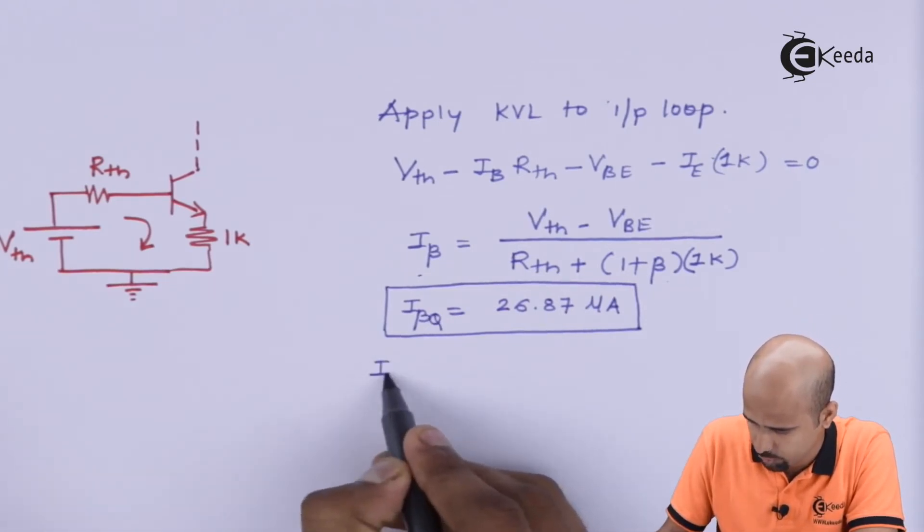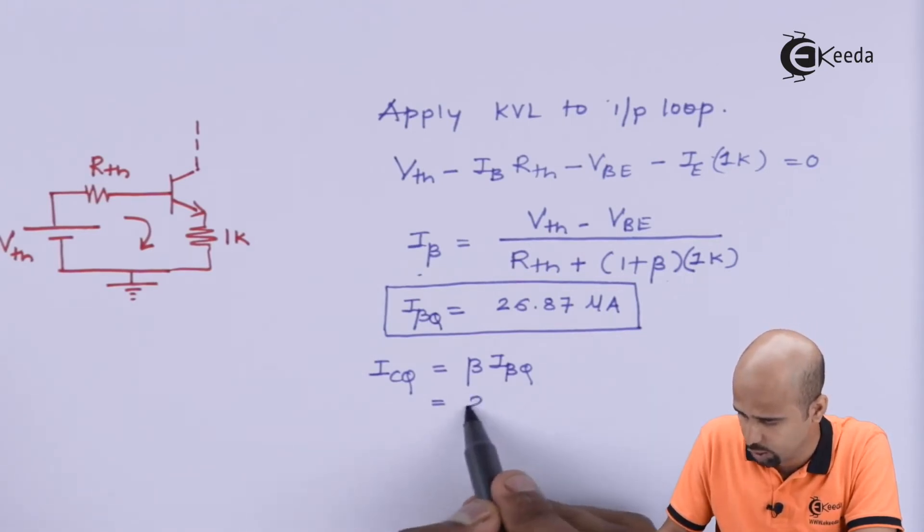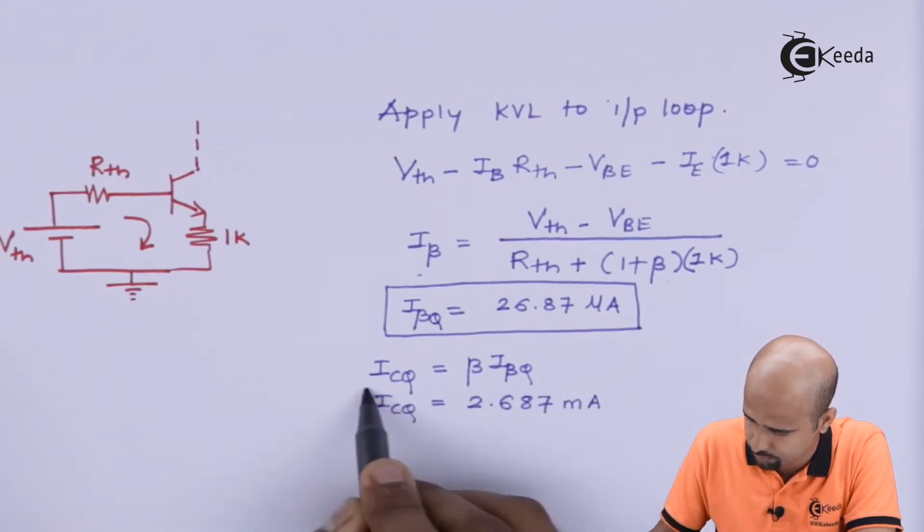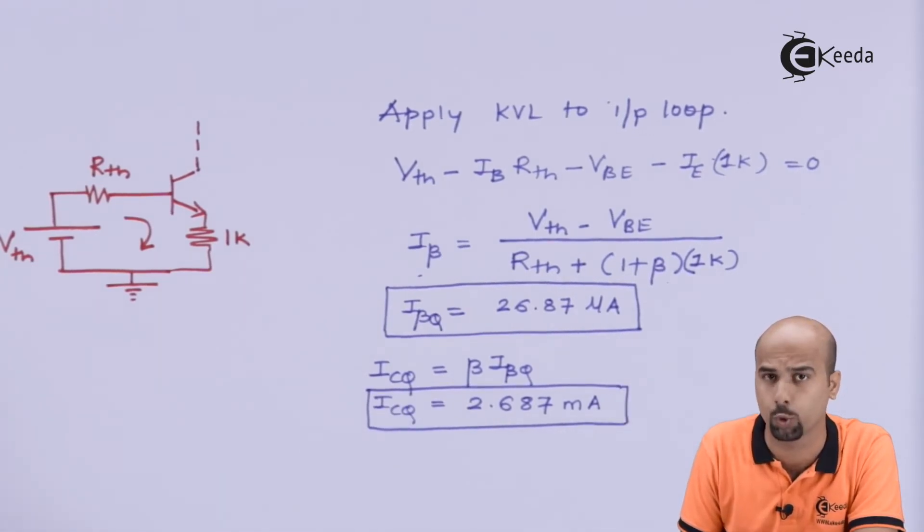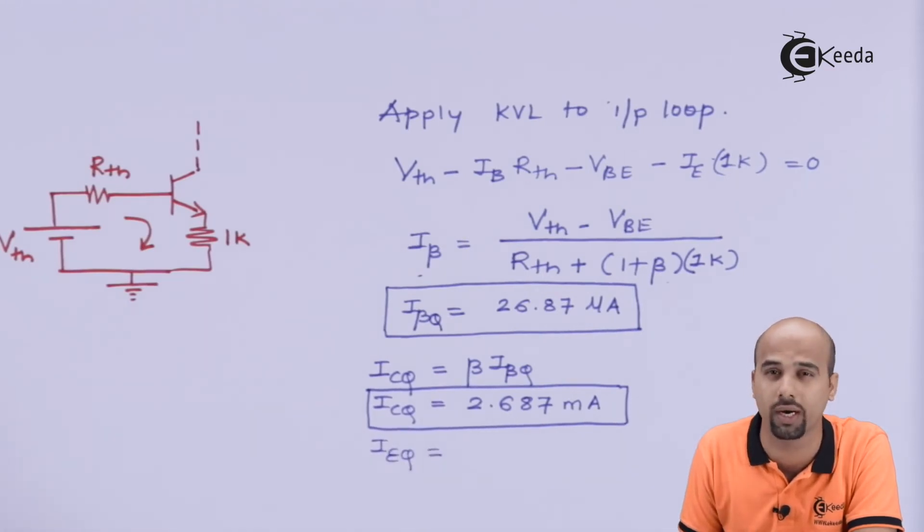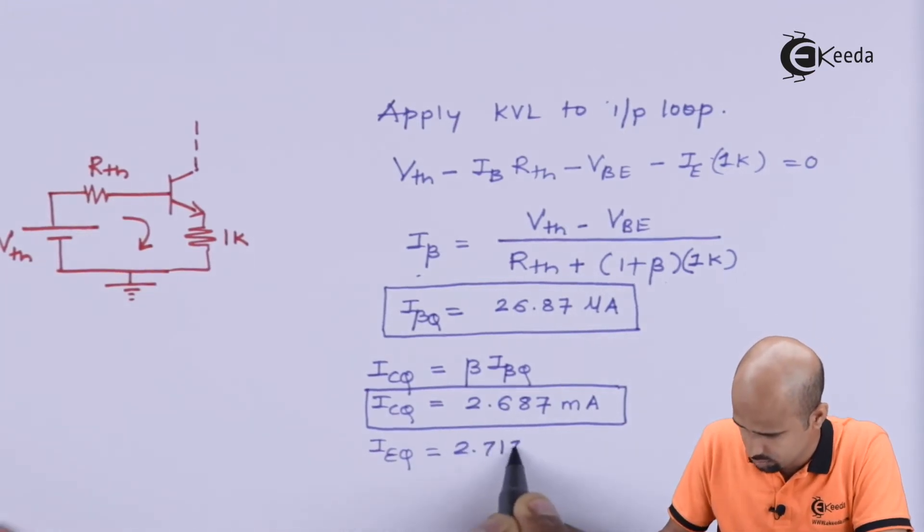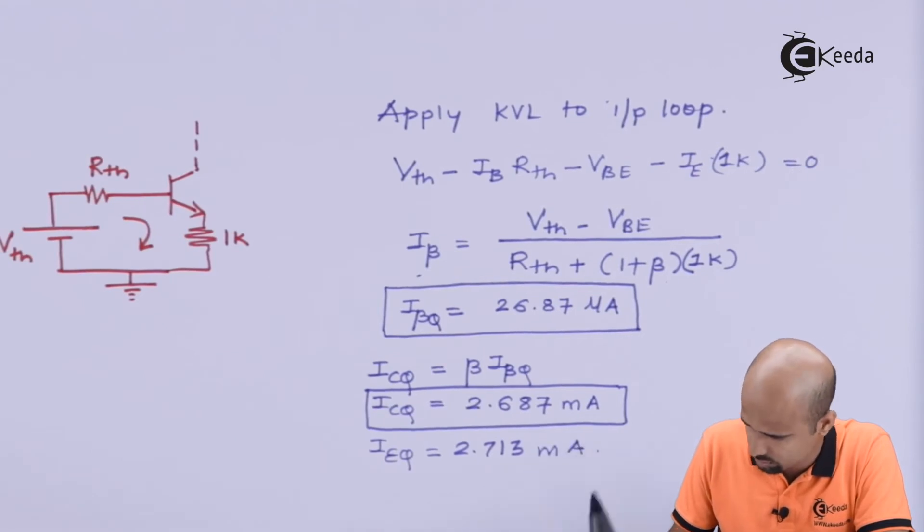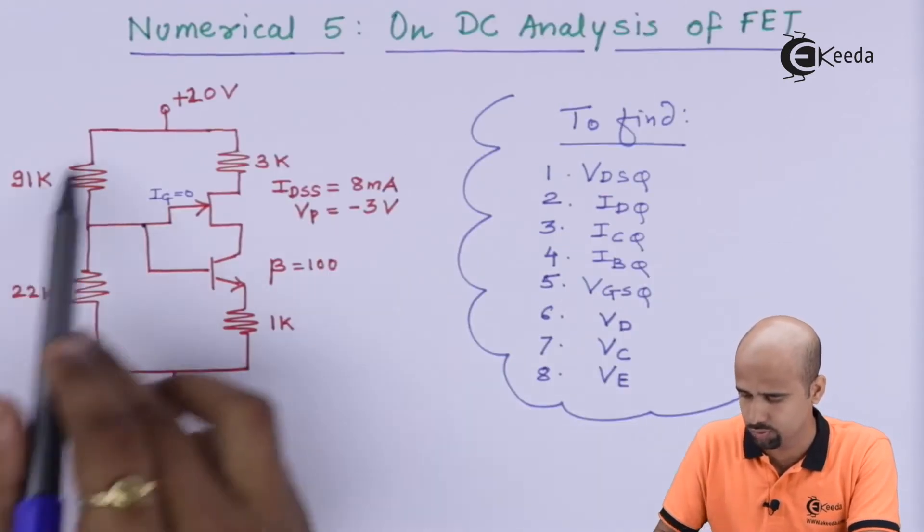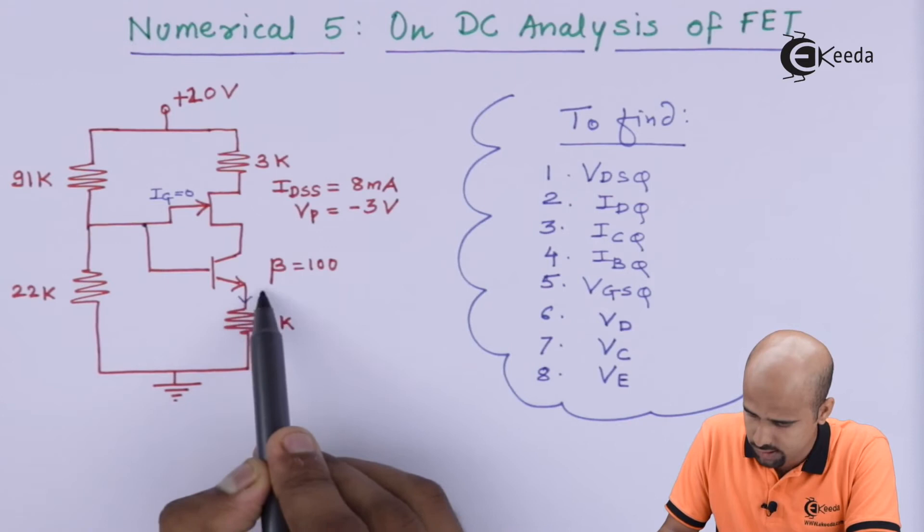Now, to find out the value of ICQ, ICQ, you all know the formula, beta into IBQ. So, if beta is equal to 100, whatever value I will be getting that is nothing but 2.687 milliampere. So, we reach towards the ICQ. What is the value of IEQ? Nearly similar to ICQ only. But if you want to correct answer, you will get 2.713 milliampere. That is nothing but the value of IE. I will require the value of IE to find out the value of VE. Now, we will again come to this particular basic circuit diagram in the question. See, this value is IE. Okay? This value is IC.